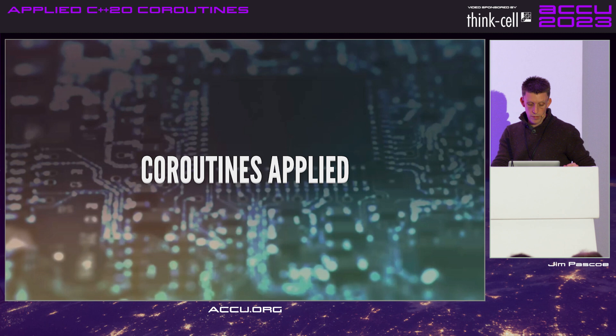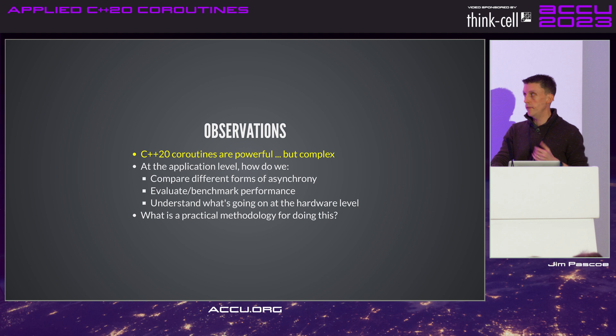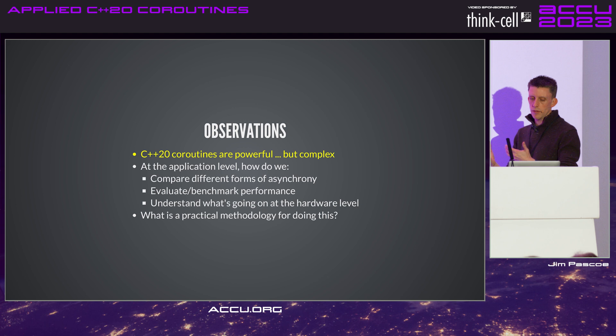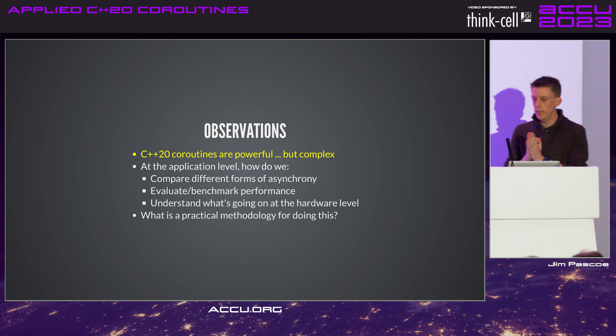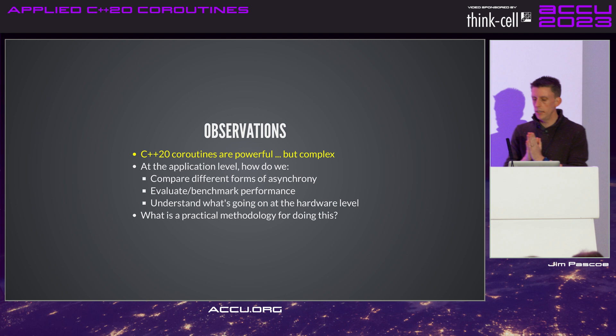Let's talk about some applications — Boost Beast examples. C++20 coroutines are very powerful but obviously very complex. At the application level: how do we compare different forms of asynchrony, benchmark performance, and evaluate it? And how can we understand what's going on at the hardware level? These are practical questions for real-world deployment.